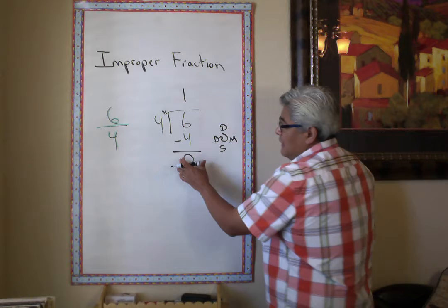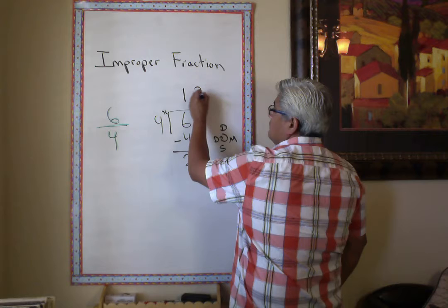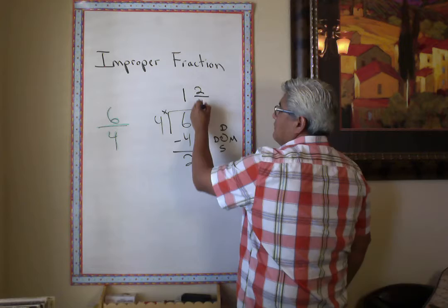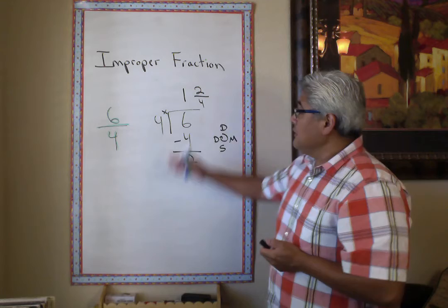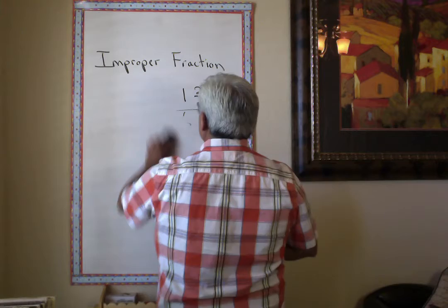But we're not done — there's nothing else to bring down. So we're going to bring this remainder up top and put it as two, and use the divisor on the bottom. So it's the same as the other one — it's one and two fourths. You can always use division to turn an improper fraction into a mixed number.